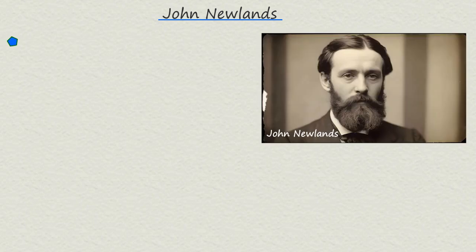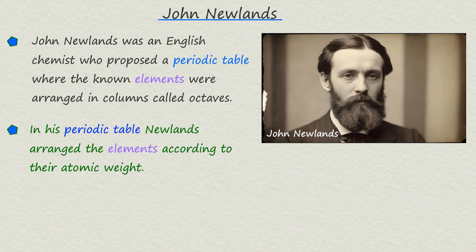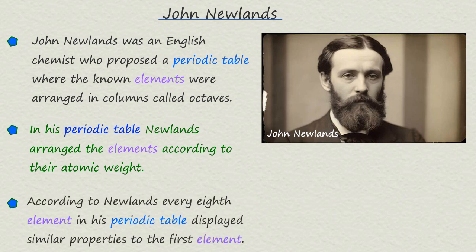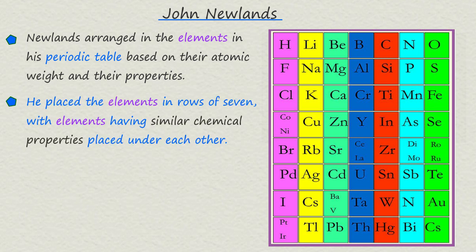John Newlands was a British chemist who made a significant contribution to the development of an early periodic table. Perhaps his most noticeable achievement was his proposal of the law of octaves. In his law of octaves, Newlands observed that when elements were arranged in order of increasing atomic weight, every eighth element displayed similar properties to the first, much like an octave in music. A simplified version of Newlands' periodic table is shown on screen. He attempted to organise the known elements into groups based on their properties and atomic weights, arranging them into rows of seven with elements exhibiting similar chemical properties placed underneath each other, much like we do in the modern periodic table.